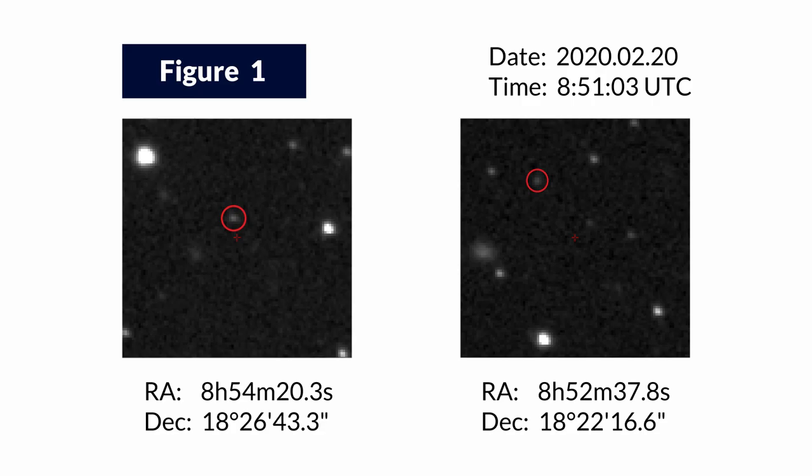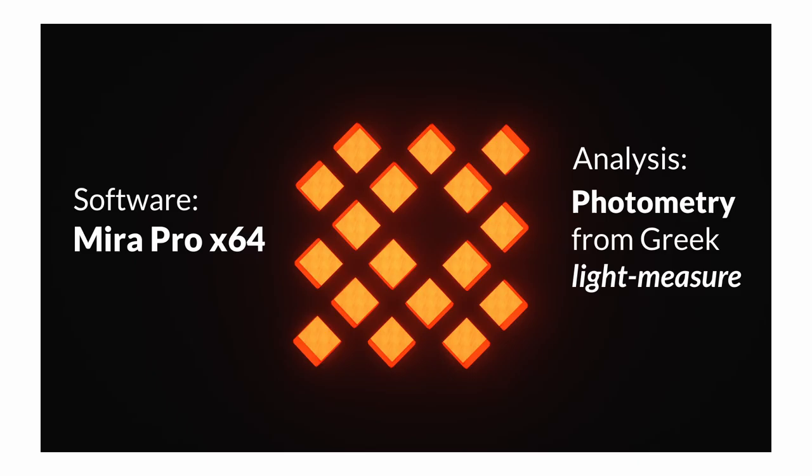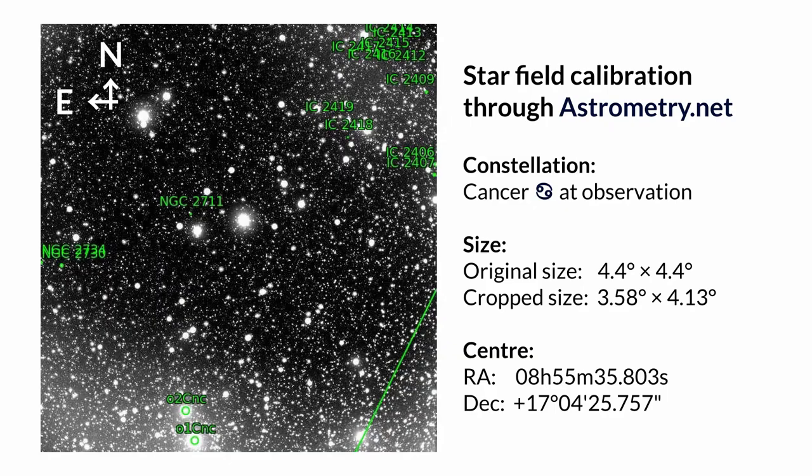What information could we gather from the faint pixels of light? The software Myra Pro 64 was used to analyze the stacks of images. The 4.4 by 4.4 square degrees field of view near the ecliptic allowed to increase the probability of finding main-belt asteroids.